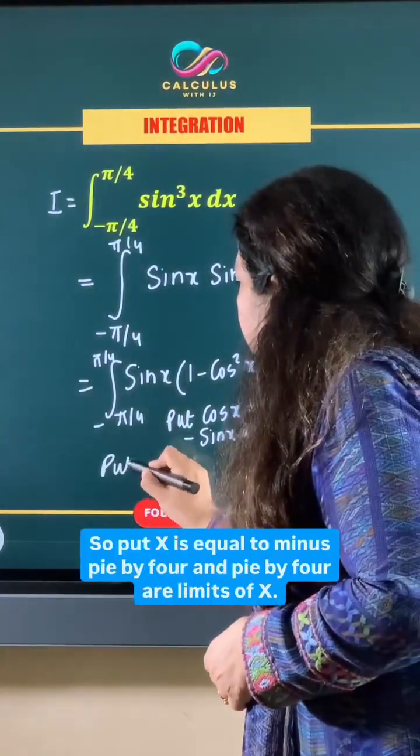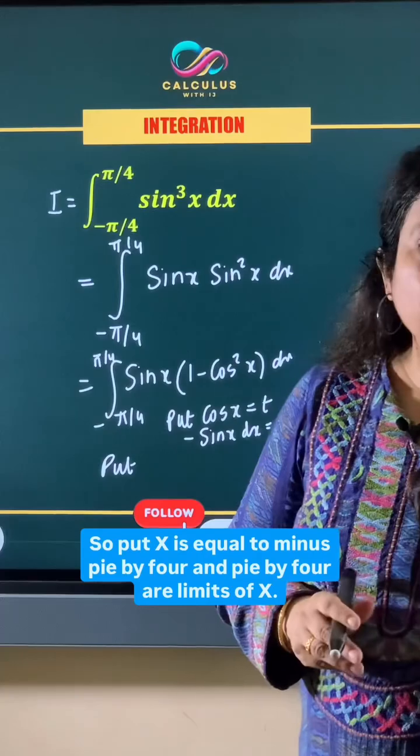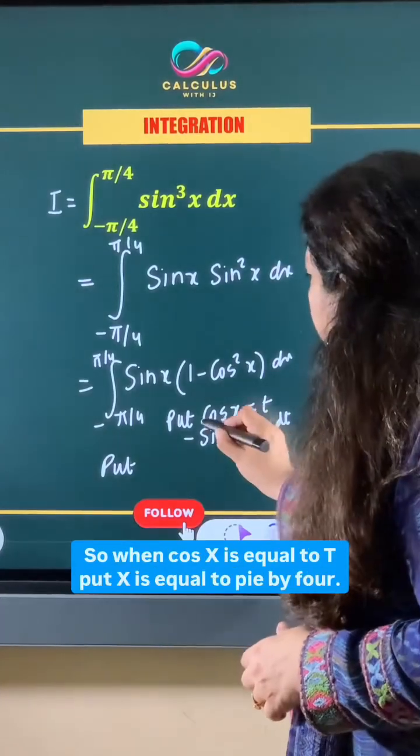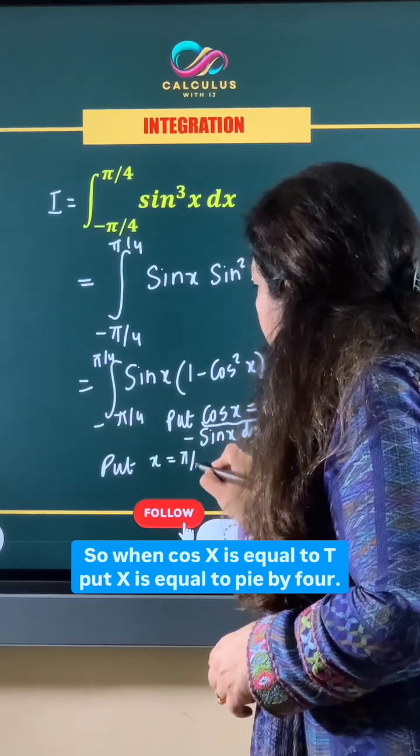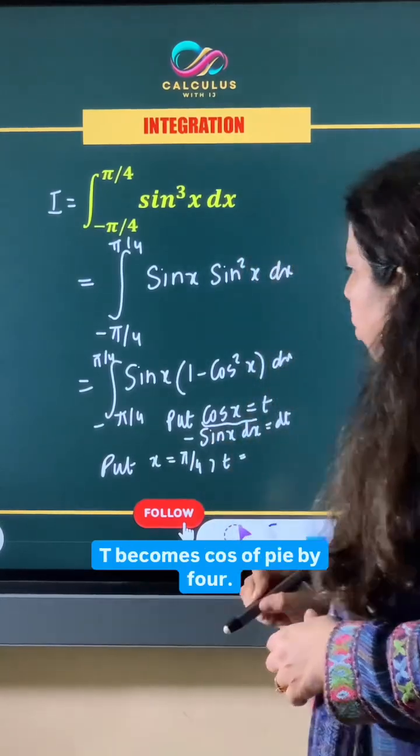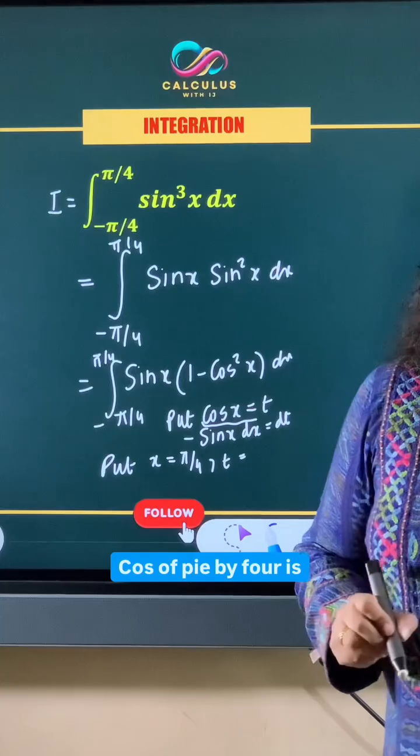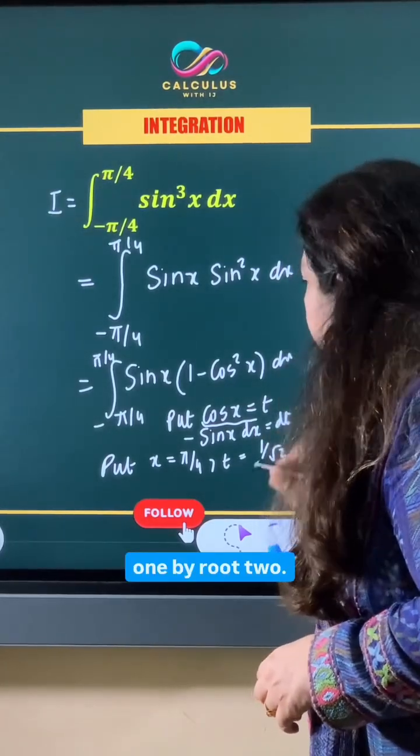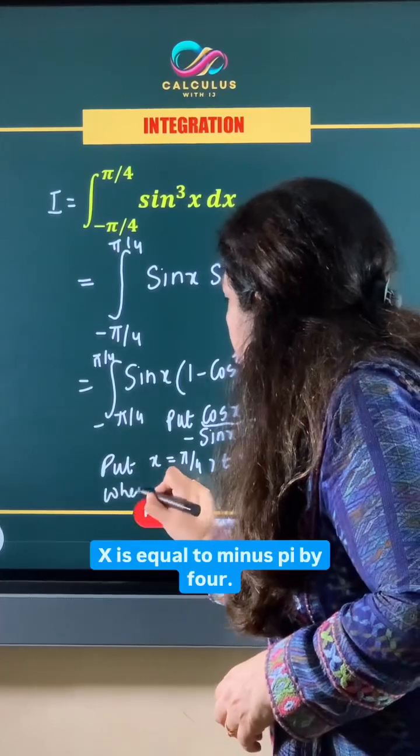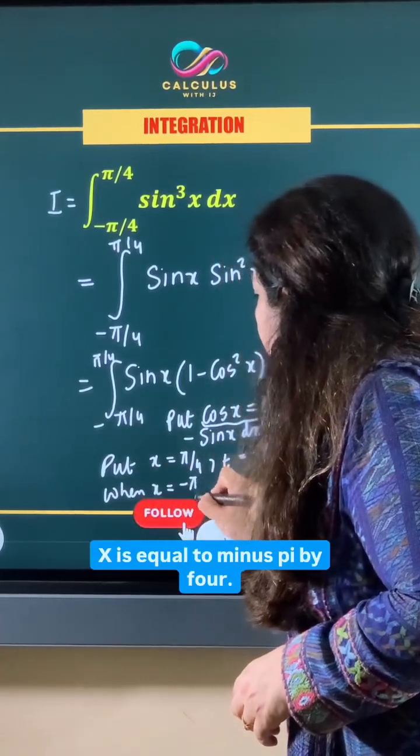Put x is equal to minus pi by 4 and pi by 4, which are the limits of x. When cos x is equal to t, put x is equal to pi by 4. So t becomes cos of pi by 4. Cos of pi by 4 is 1 by root 2, and when x is equal to minus pi by 4,